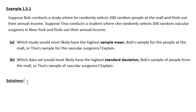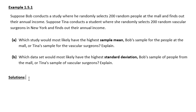Part A asks: which study would most likely have the highest sample mean? Would the highest sample mean come from the group of people at the mall, or would it come from the vascular surgeon group? The answer is that the sample of vascular surgeons would most likely have the highest sample mean.